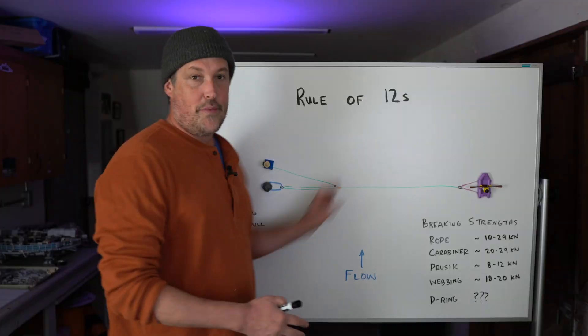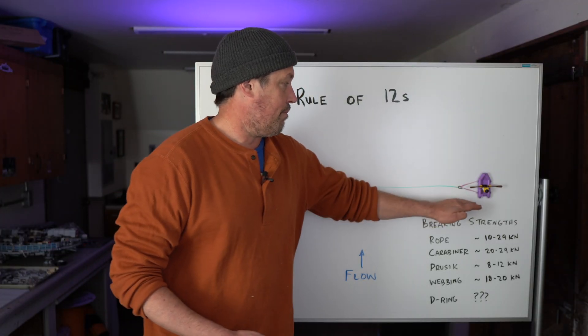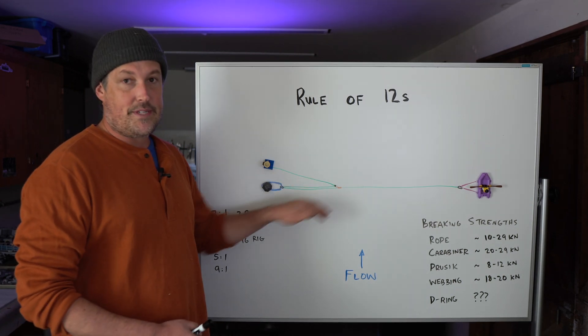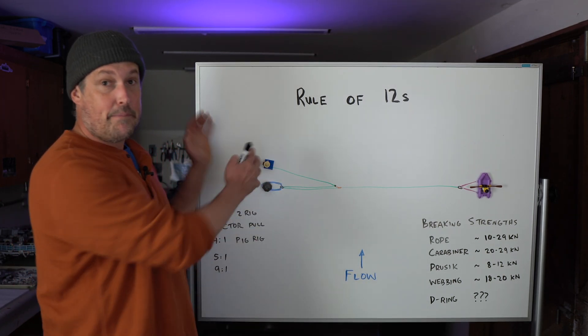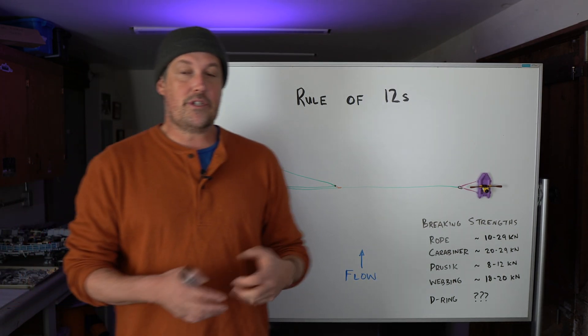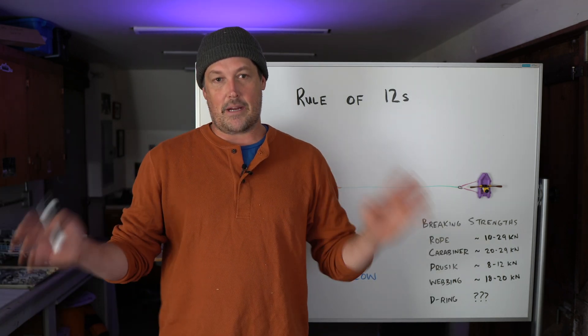I've drawn up on the whiteboard here, a three to one system. There's a raft over here on a rock. We're pulling on it and there's a three to one system here. And there's somebody pulling and there's people here pulling on the rope. And there's some generalizations I want to make about pulling.